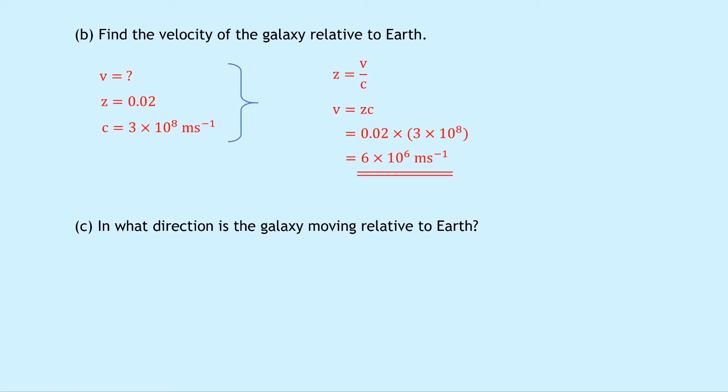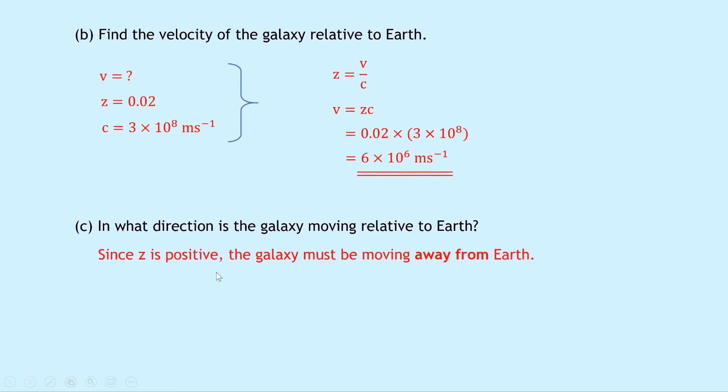Part C says in what direction is the galaxy moving relative to the Earth? Since z is positive, the galaxy must be moving away from the Earth.